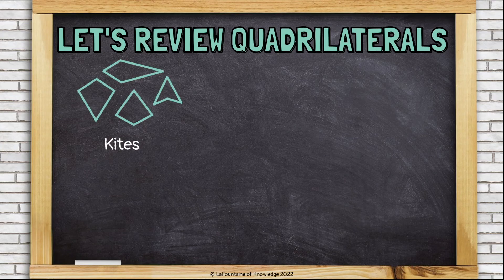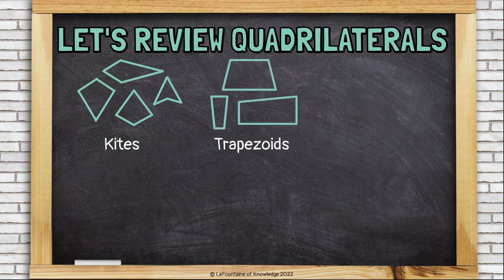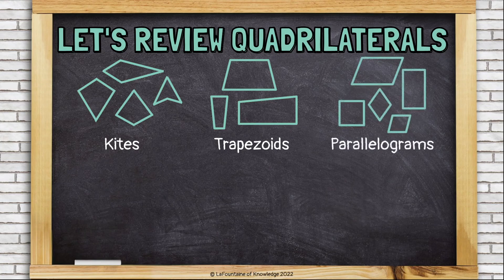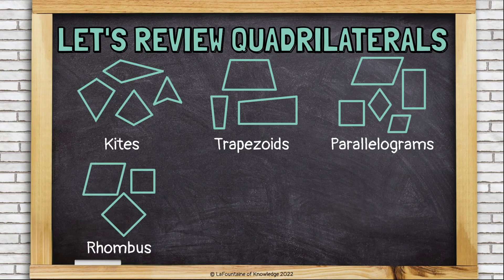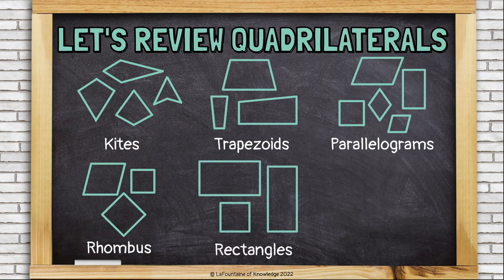Here are some examples of kites — these shapes don't have any sets of opposite parallel sides. Here's what trapezoids look like: all three of these shapes only have one set of opposite parallel sides. These are all parallelograms — and yes, you see a rectangle, a square, and even a rhombus in there. All of these shapes are parallelograms because they all have two sets of opposite parallel sides. Rhombuses have congruent sides, rectangles have right angles, and squares have both.